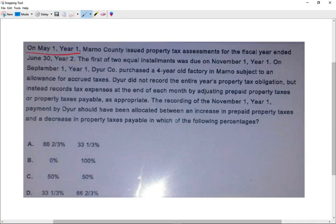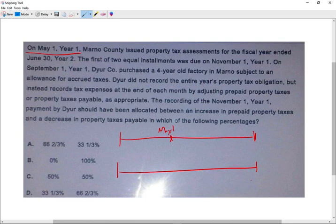On May 1st year one, Marno County issued property tax assessment for the fiscal year ended June 30th year two. So let's look at a timeline. And we are looking, this is May 1st. This is when the county issued the taxes and the year end is June 30th. So this is year end.